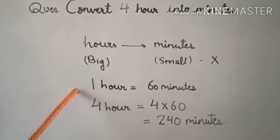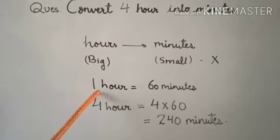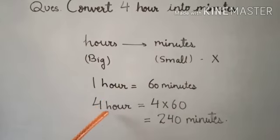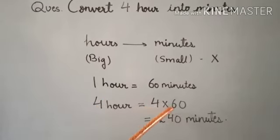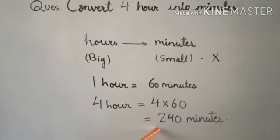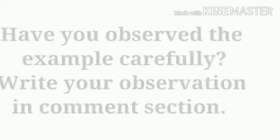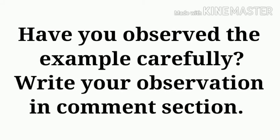We need to find the relation. 1 hour equals 60 minutes. So 4 hours equals 4 multiplied by 60, which equals 240 minutes. Have you observed the example carefully?